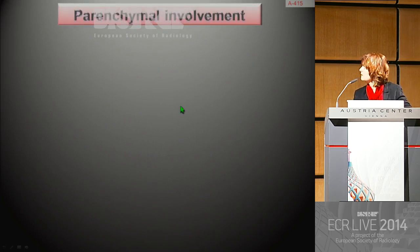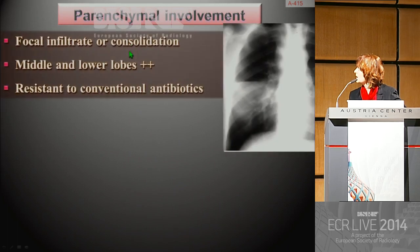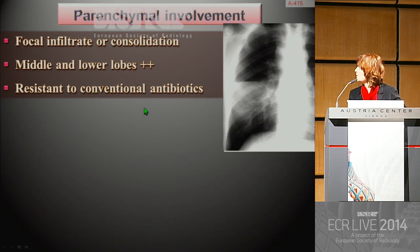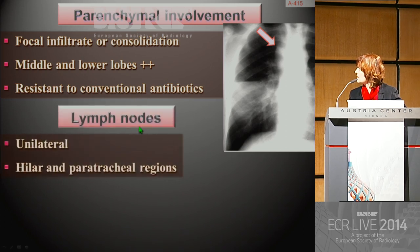The typical finding in primary tuberculosis is parenchymal involvement. It consists of a focal infiltrate or a small consolidation, usually subpleural and sublobular. It mainly involves the middle and lower lobes due to their greatest ventilation, and less often the entire segment of the upper lobe. Resistance to conventional antibacterial therapy should suggest this diagnosis. This parenchymal involvement is associated with enlarged lymph nodes that are usually unilateral, mainly in the paratracheal, right paratracheal, tracheobronchial, subcarinal, and hilar areas.